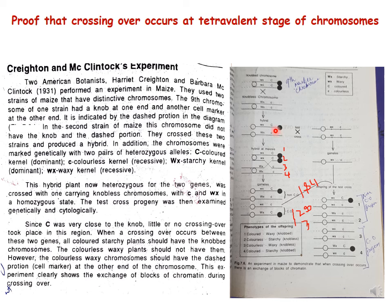In the hybrid, it is heterozygous for C/c and Wx/wx. This hybrid plant was then crossed with one carrying a knobless chromosome with c and wx in the homozygous state — this is technically a test cross, where the F1 hybrid is crossed with a homozygous recessive parent. Since C was very close to the knob, little or no crossing over took place in that region, consistent with what we know about linkage — closely located genes show reduced crossing over.